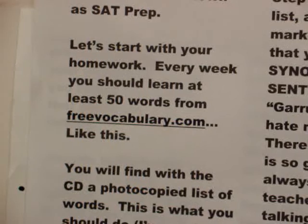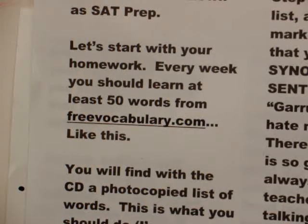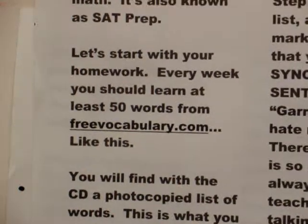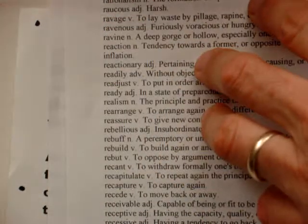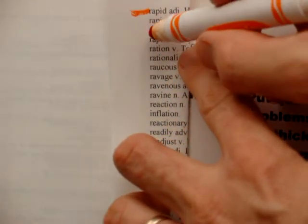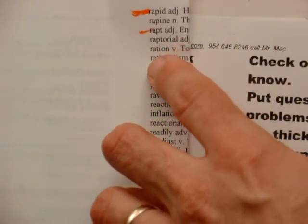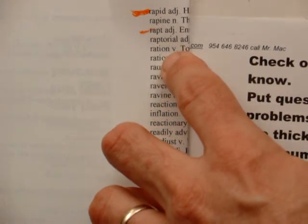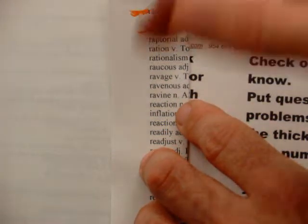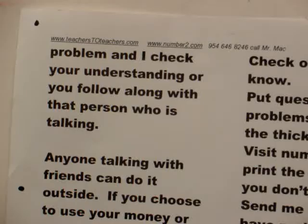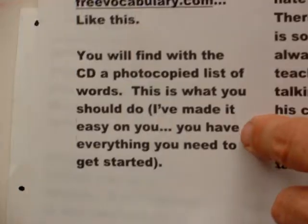Every week you should learn at least 50 words from freevocabulary.com. You print out your list of free vocabulary words and go down it. For example, I know 'rapid' — no problem. I don't know 'repine,' but 'raptorial' — I can work with that. 'Ration' is a verb: during World War Two they rationed gasoline, giving it out as a quota. I'm coming up with synonyms and using it in a sentence — that's what we're looking for.